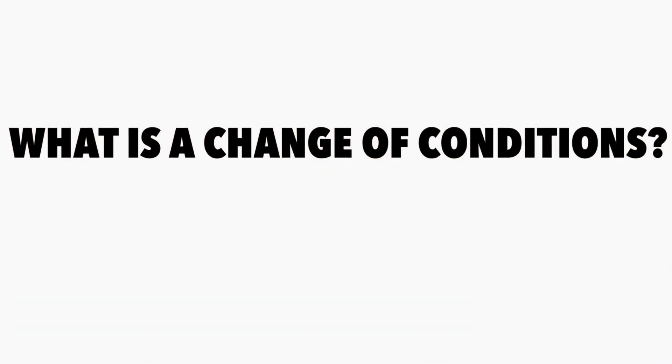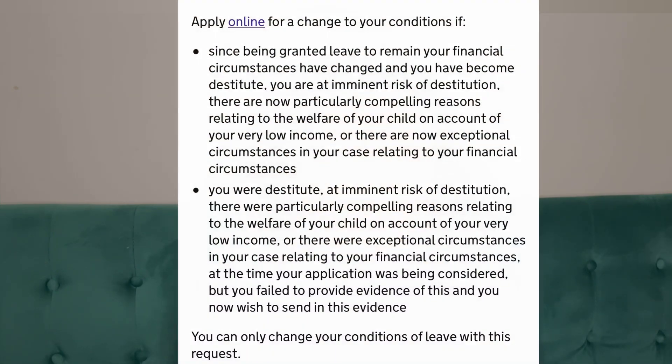So what is a change of conditions? A change of conditions is when you apply for the conditions on your leave to remain to be removed. Usually if you're given stay or leave to remain on the basis of the 10-year route on private life or family life, there's usually a condition on your stay which is no recourse to public funds. What this means is that you have no access to any public benefits whatsoever — no child benefits, no universal credit, no support from the government whatsoever.